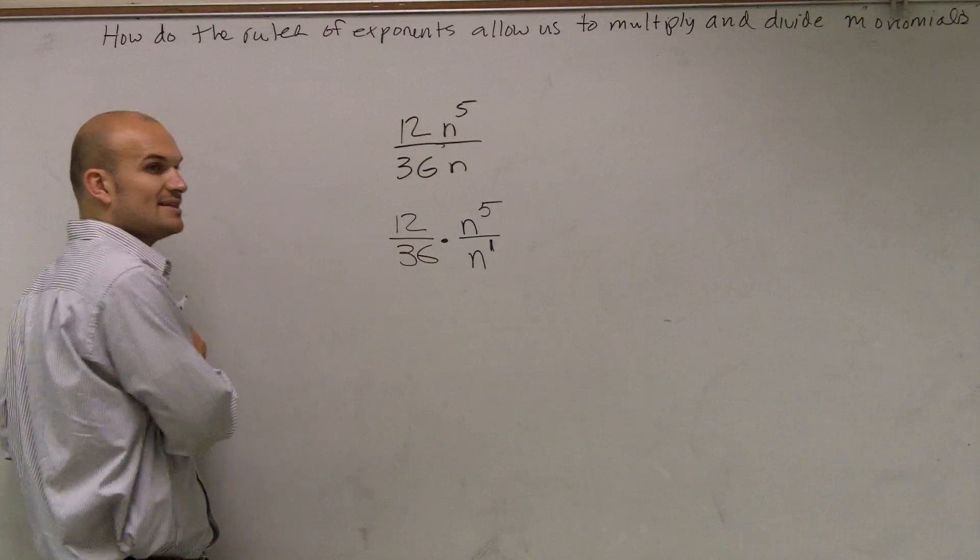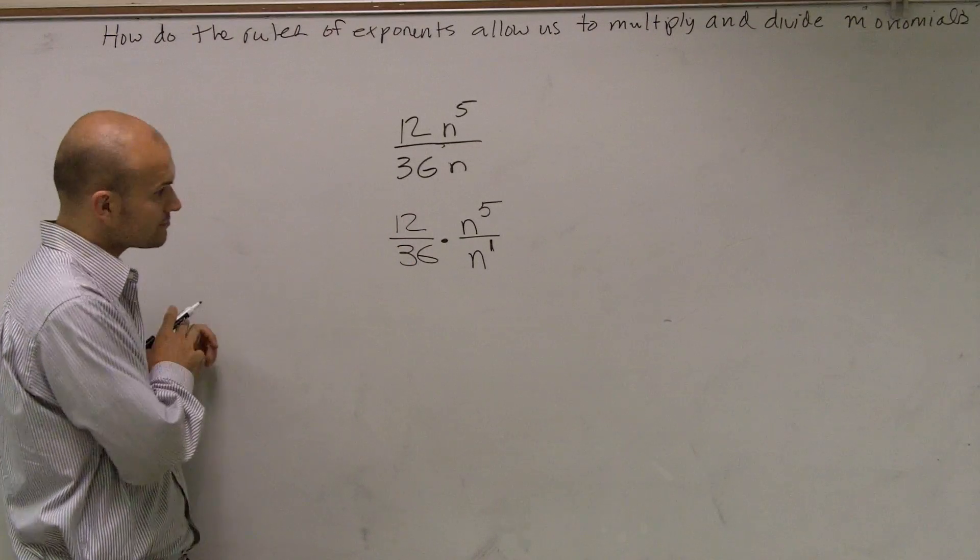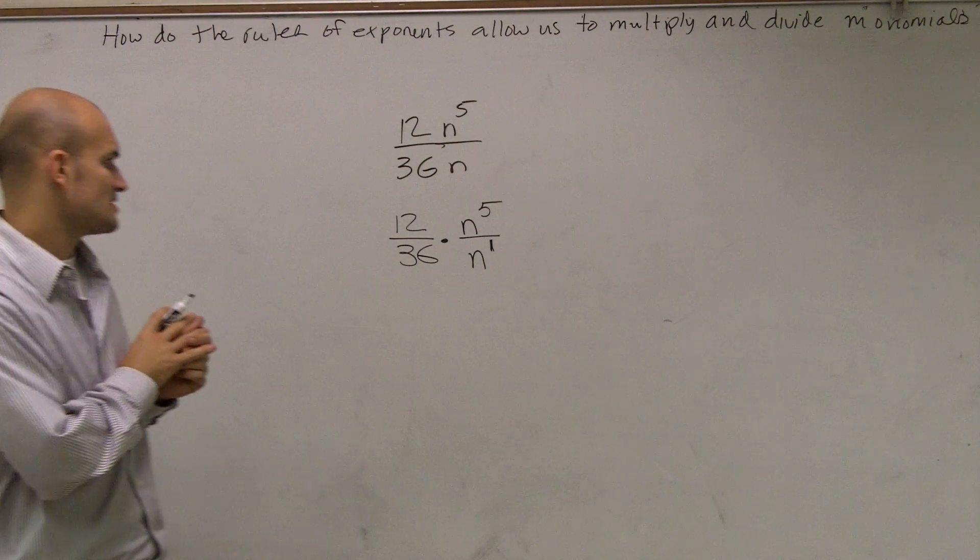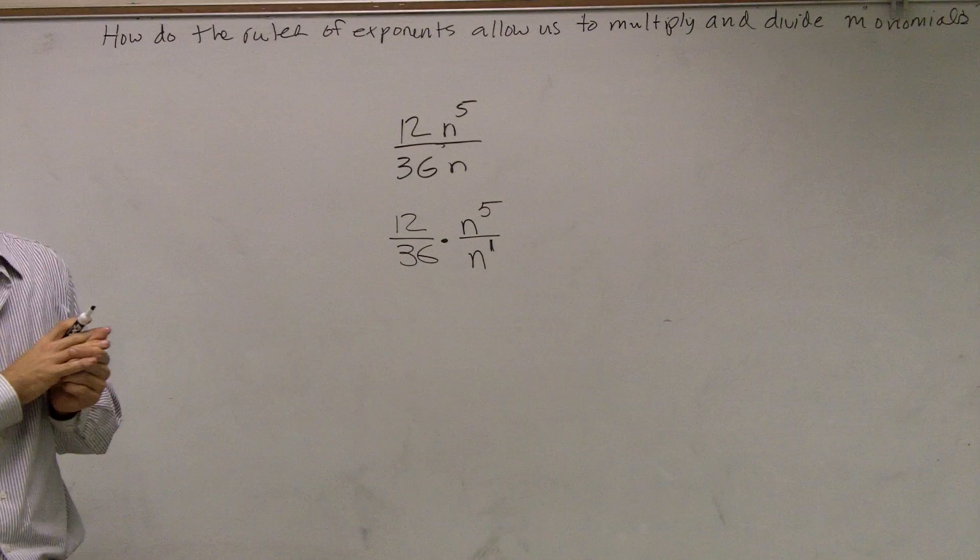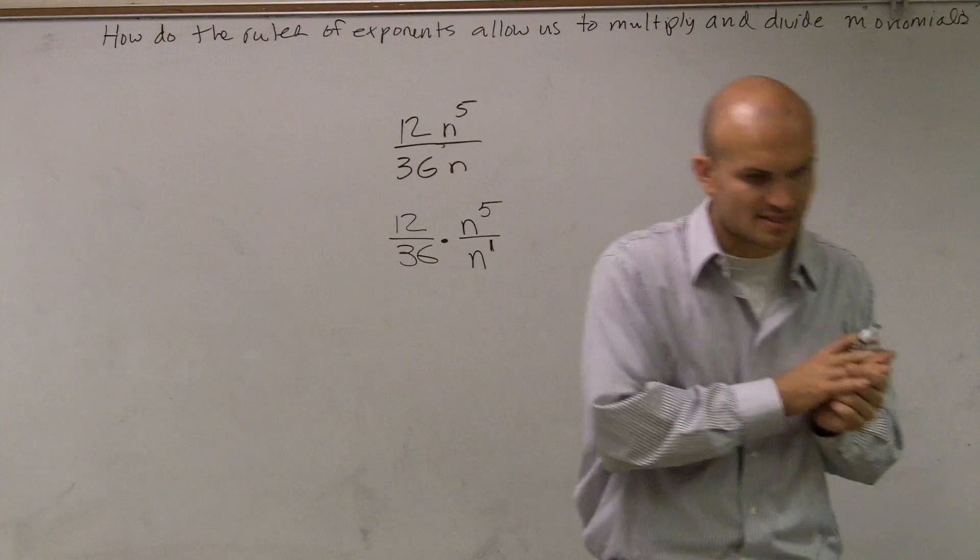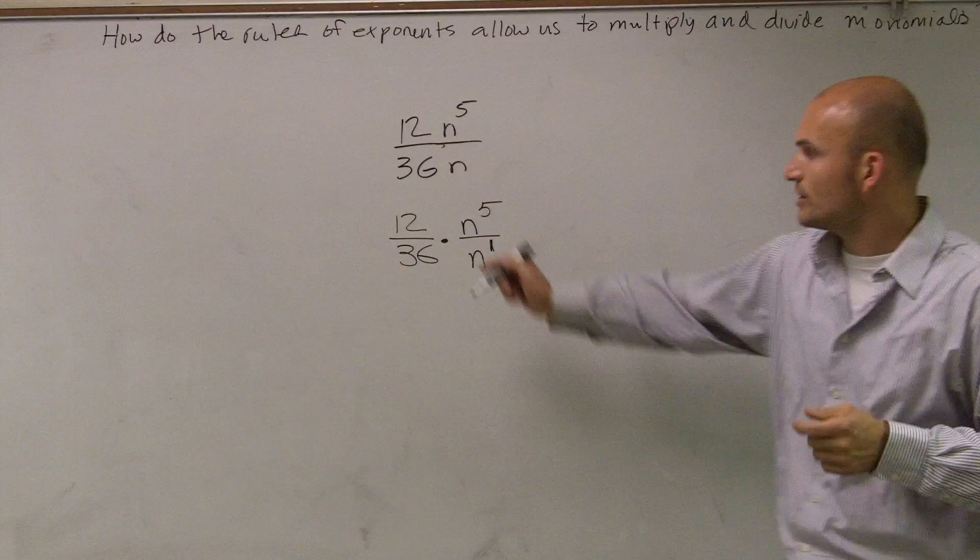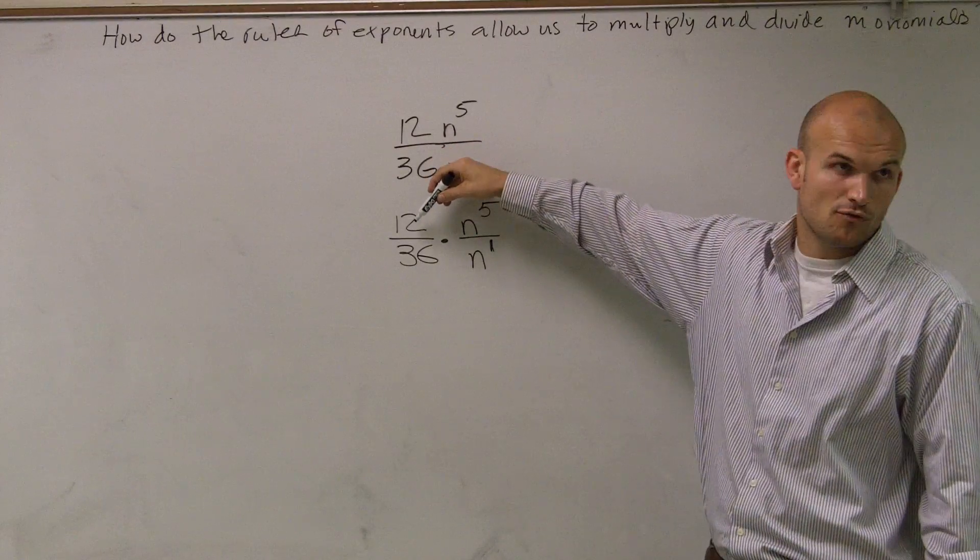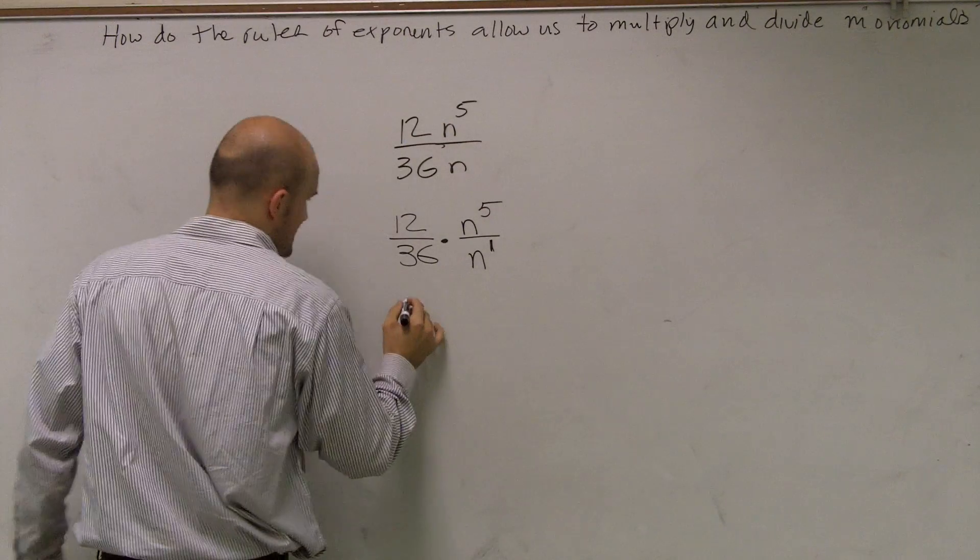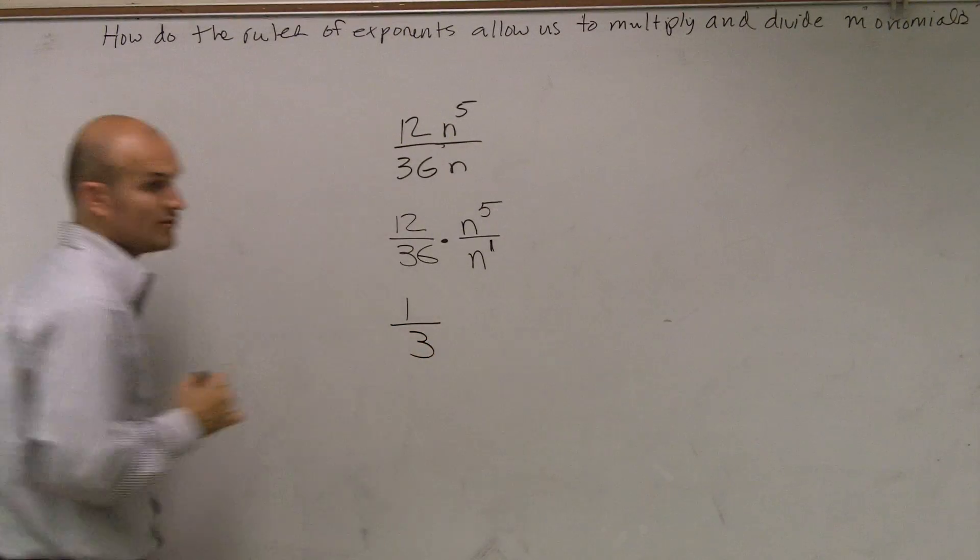Let's see, both 6 goes into there, so that'd be 2 over 6. Or 6 goes in there twice, 6 goes in there 6 times. Or you could also say 12 goes into 12 one time, 12 goes into 36 three times. So this reduces down to 1 third.